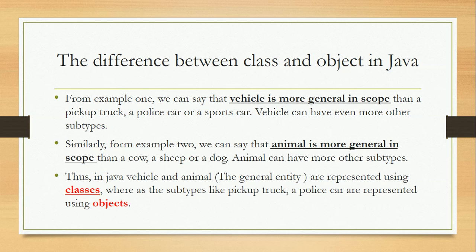From example one, we can say that a vehicle is more generalised than a pickup truck, a police car, or a sports car. Similarly, from example two, we can say that an animal is more generalised than a cow, a sheep, or a dog. An animal can have many other subtypes.